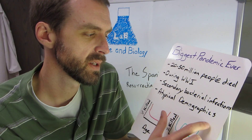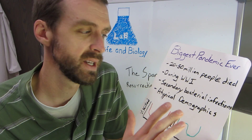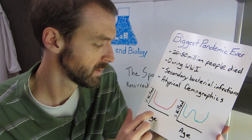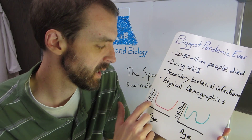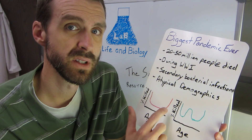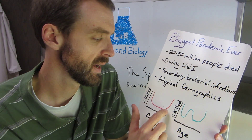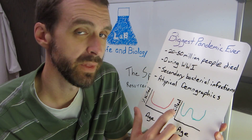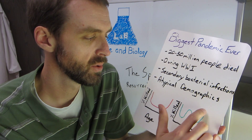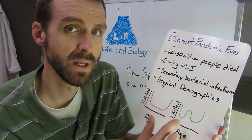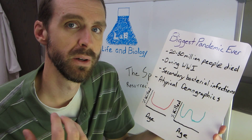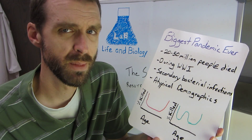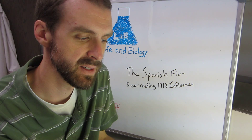This flu is also always mentioned for its atypical demographics. If you look at the percent of people killed from a typical seasonal flu plotted against age, most of the deaths are from the very elderly or the very young, giving you a U-shaped plot. However, with the 1918 flu you get a W-shaped plot, and this peak in the middle represents the age group of 15 to 34 — people in the prime of their health were especially susceptible.